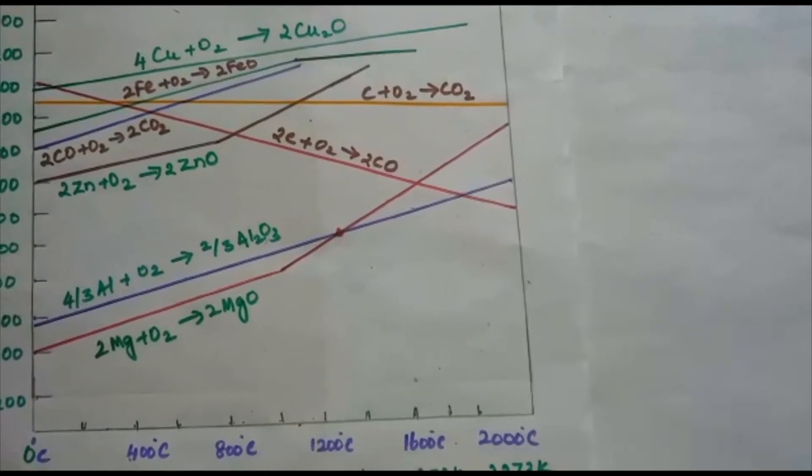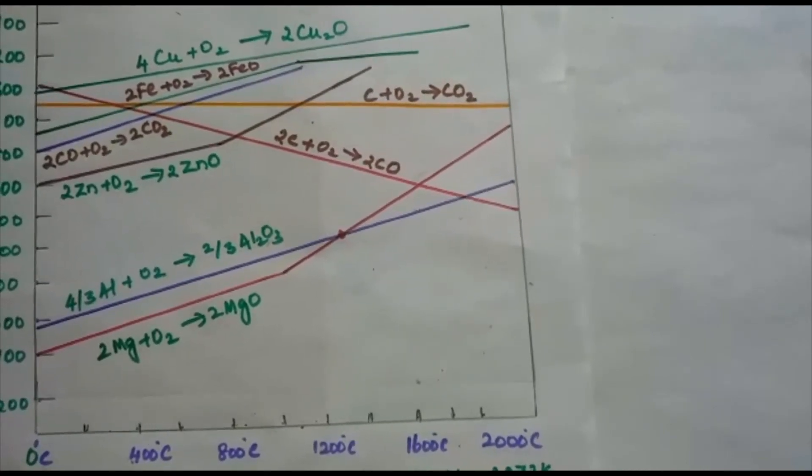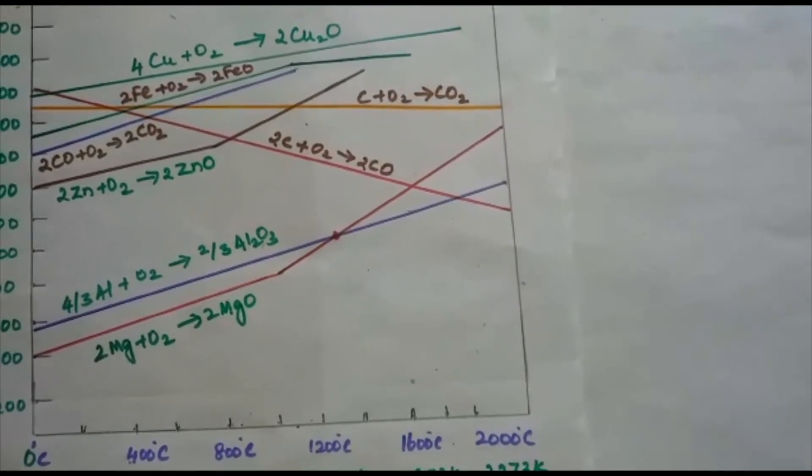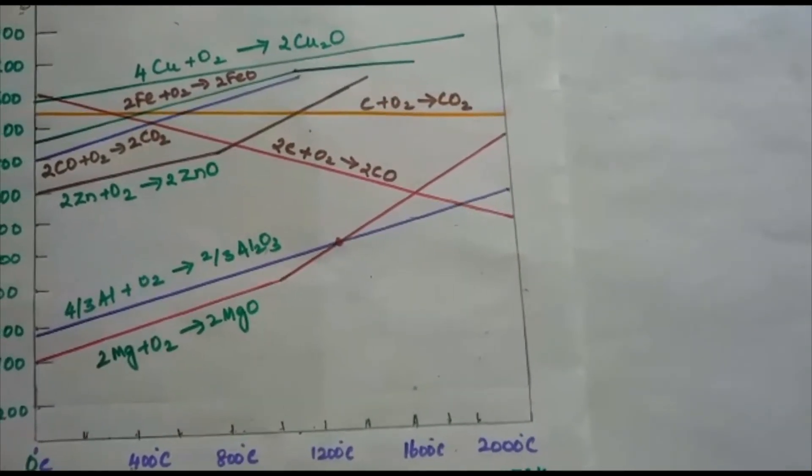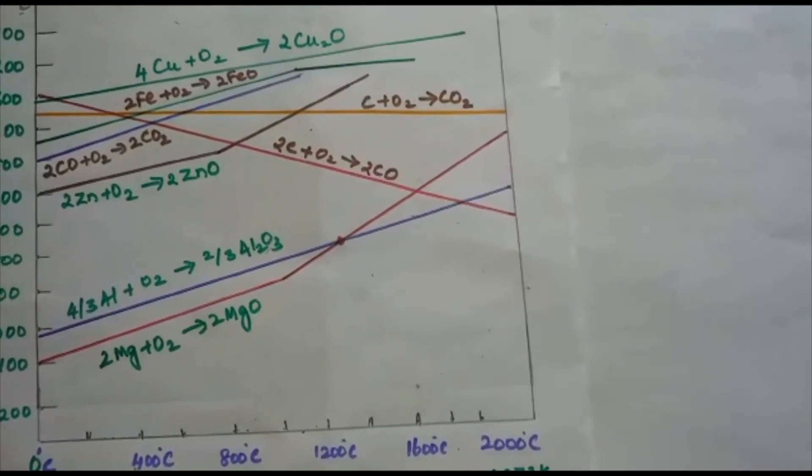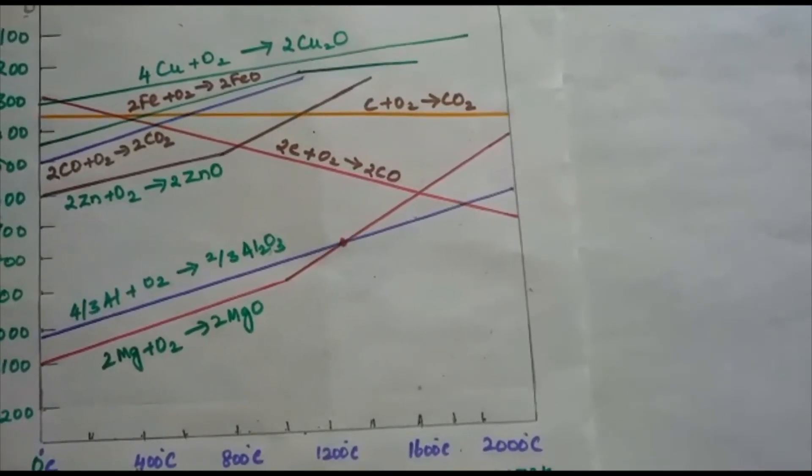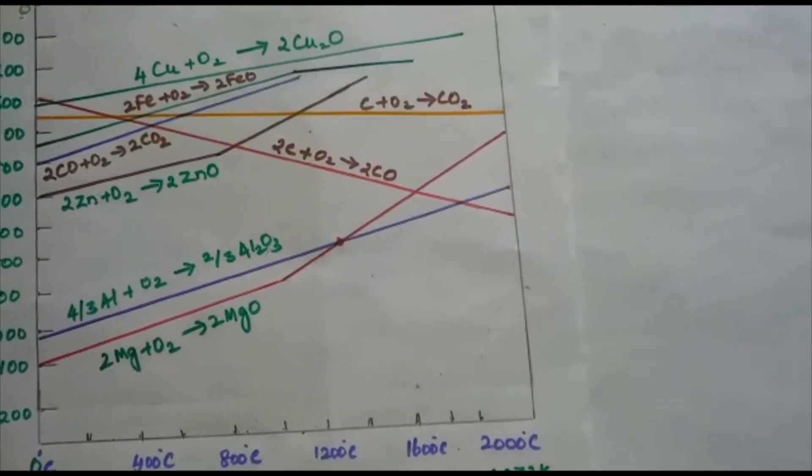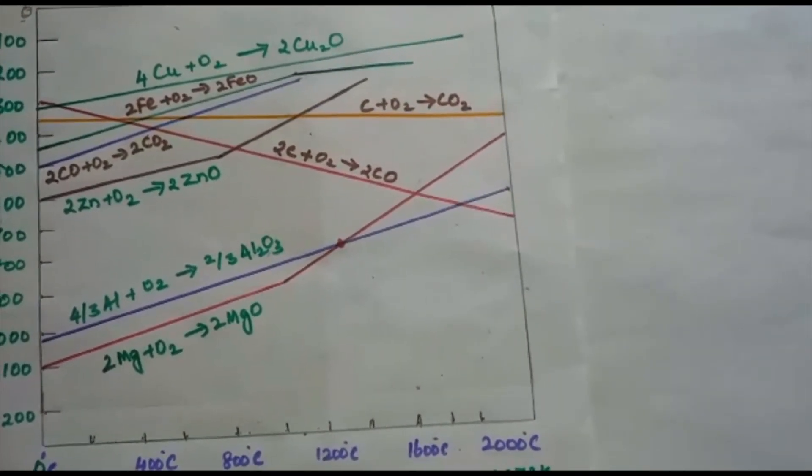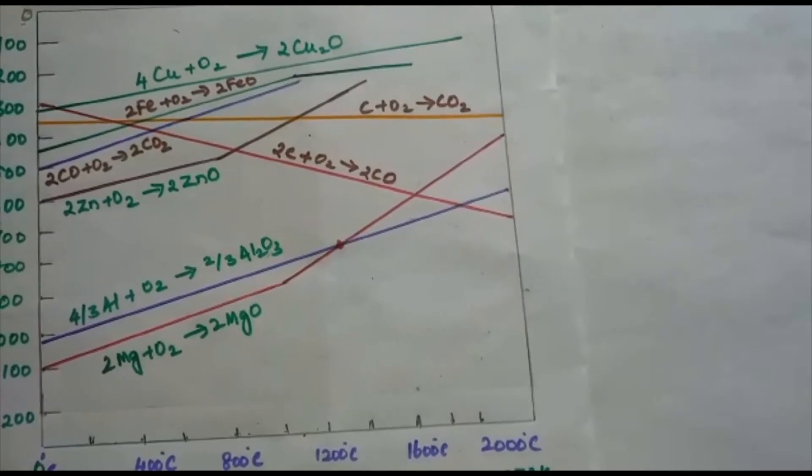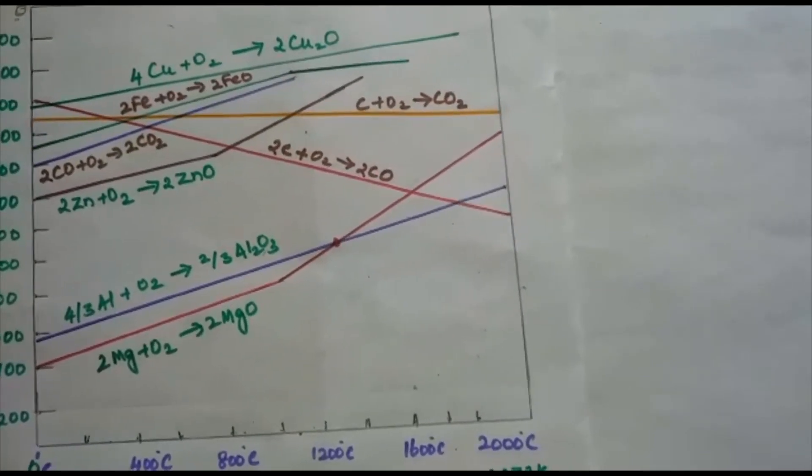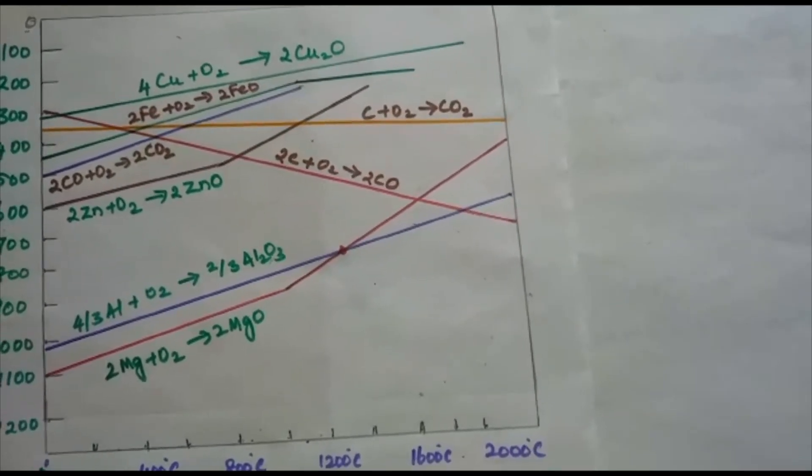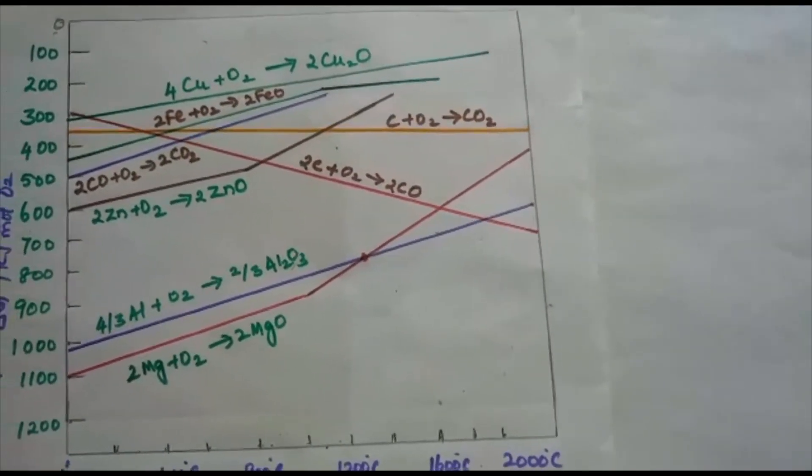So the only dominant variable in equation becomes T, that is temperature. Delta S depends much on the physical state of the compound. Since entropy depends on disorderliness or randomness in the system, it will increase when a compound melts, that is changes from solid to liquid, or vaporizes, that is liquid to gas. Since molecular randomness increases on changing the phase from solid to liquid or from liquid to gas.